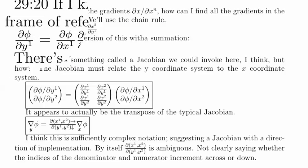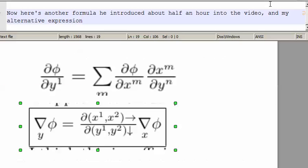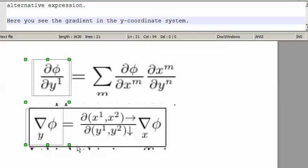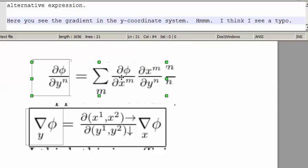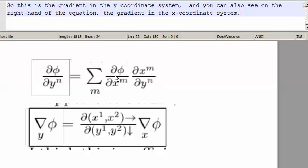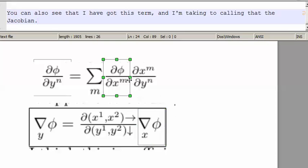Now here's another formula that he introduced at like about half an hour into the video. And my alternative expression right here. Here you see the gradient in the Y coordinate system. I think I see a typo. This Y1 here is supposed to be a Yn.